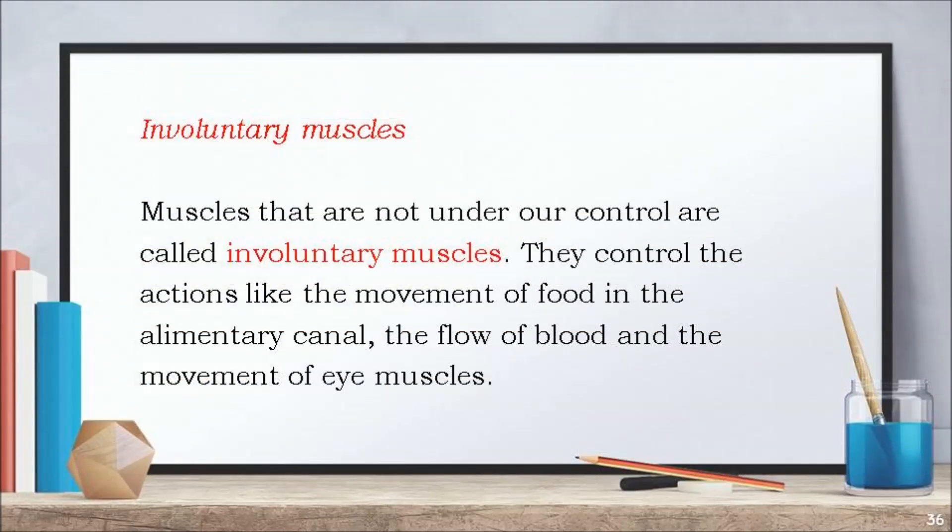Muscles that are not under our control are called involuntary muscles. Involuntary muscles control actions like the movement of food in the alimentary canal, the flow of blood and the movement of eye muscles.